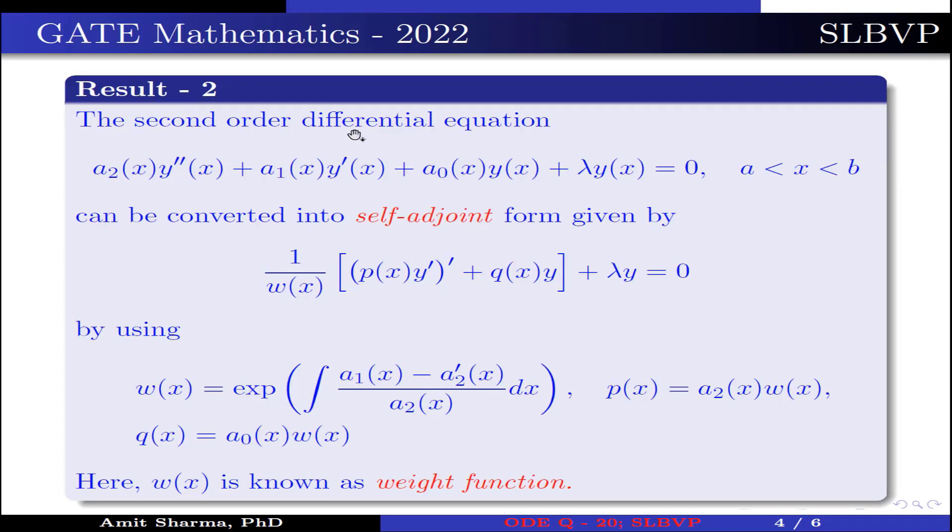Result 2: The second order differential equation a₂(x)y''(x) + a₁(x)y'(x) + a₀(x)y(x) + λy(x) = 0, where a < x < b, can be converted into self-adjoint form given by 1/w(x)·[p(x)y']' + q(x)y + λy = 0...